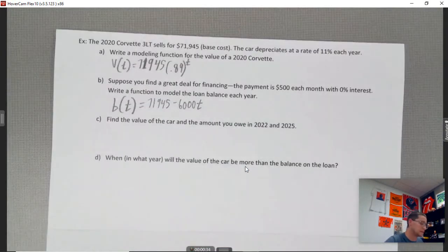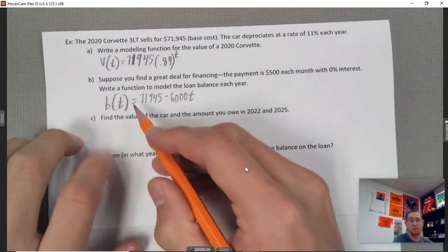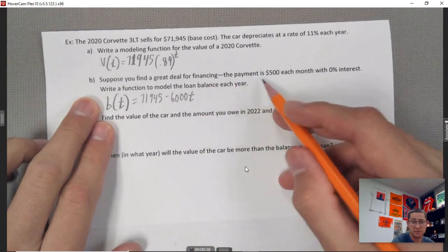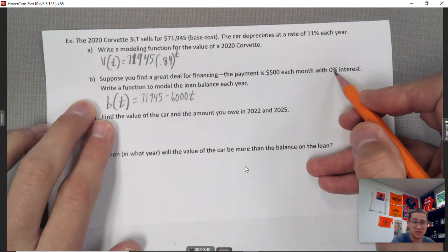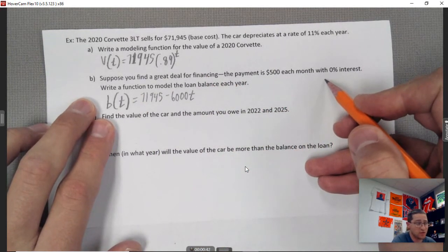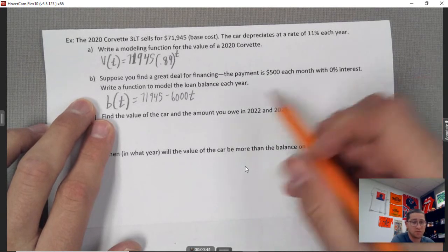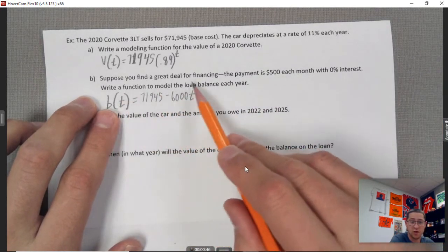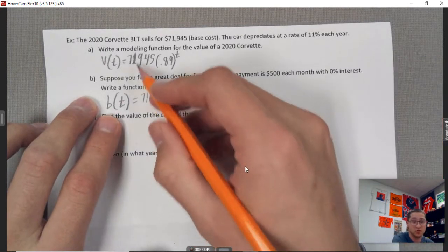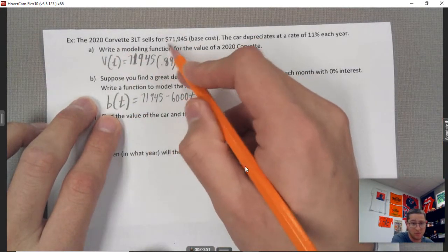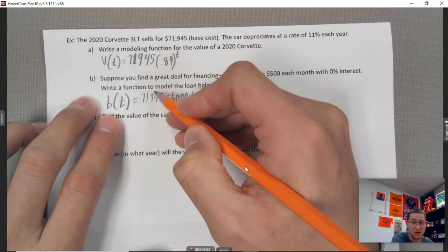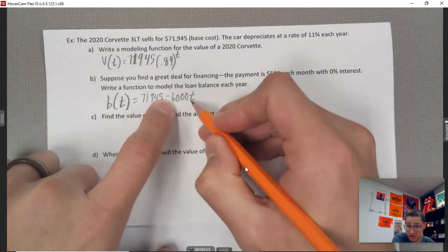Part b is the tricky part here. So you find a great deal for financing - the payment is $500 per month with zero percent interest. So you pay $500 per month towards your car. Write a function to model the loan balance each year. So the loan balance is the tricky part, right? You're paying that $71,945, but each year -